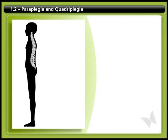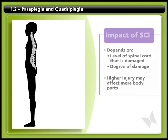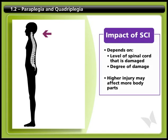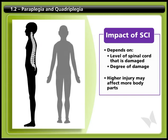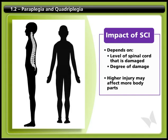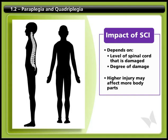The effect of a spinal cord injury depends on the level of the spinal cord that is damaged as well as the degree of damage. The injury can happen in your neck, back, or lower back. The higher the injury, the more parts of the body are likely to be affected.